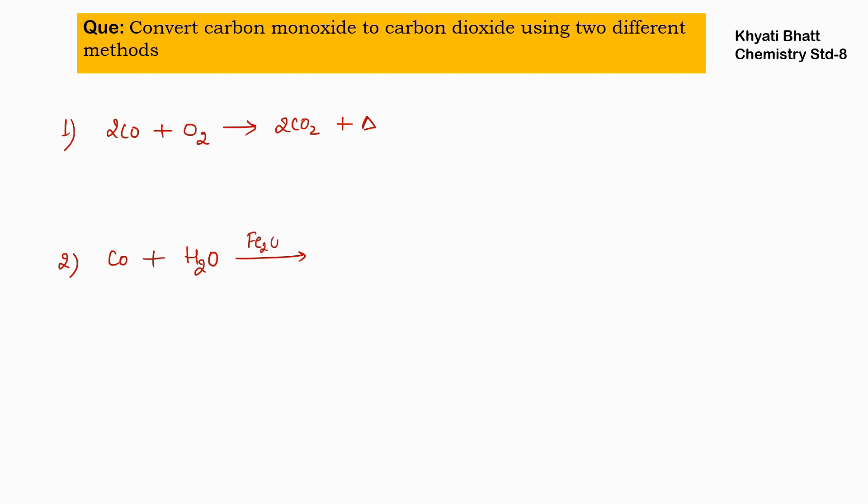So Fe2O3 we are taking as a catalyst and the temperature is 450 degrees Celsius. So we will get here carbon dioxide and hydrogen gas. So these are the two methods via which we can convert carbon monoxide into carbon dioxide.